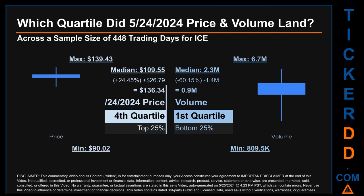Hello, my name is Maria. Which quartile did May 24, 2024 price and volume land in? Across a sample size of 448 trading days, the maximum end-of-day price for ICE was $139.43, while the minimum was $0.90. May 24, 2024's price of $136.34 landed within the fourth quartile, meaning it was within the top 25% of all sampled end-of-day prices. The day's volume landed within the first quartile, at the bottom 25% of all sampled daily volume, which saw a max daily volume of 6.7 million and a minimum of 809,500.